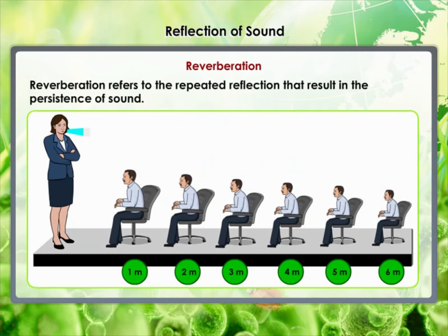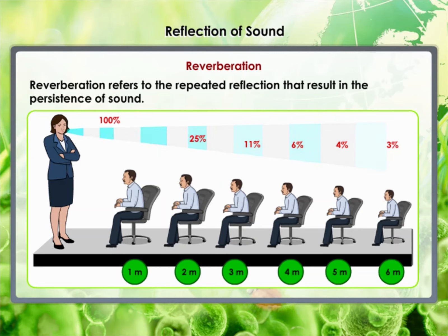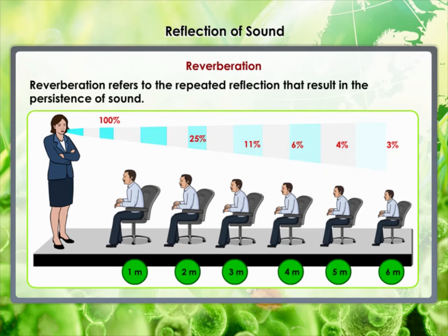Reverberation. A sound created in a big hall will persist by repeated reflection from the walls until it is reduced to a value where it is no longer audible. The repeated reflection that results in this persistence of sound is called reverberation. In an auditorium or a big hall, excessive reverberation is highly undesirable. To reduce reverberation, the roof and walls of the auditorium are generally covered with sound absorbent materials like compressed fiberboard, rough plaster or draperies. The seat materials are also selected on the basis of their sound absorbing properties.